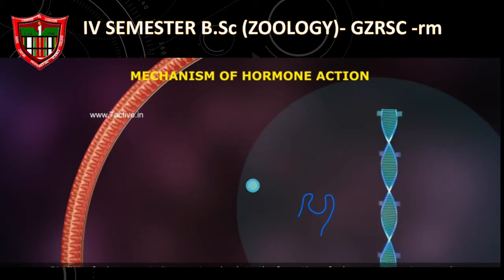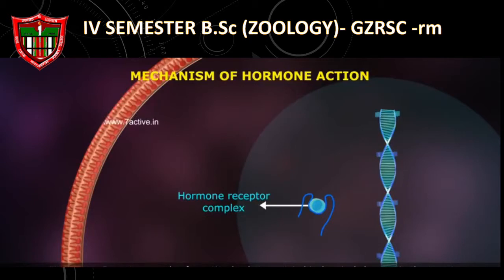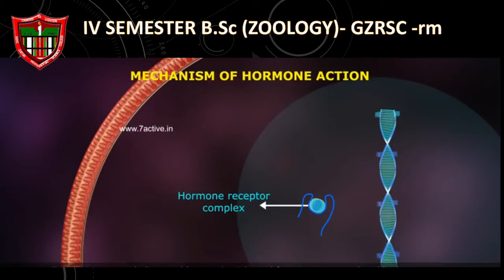Binding of hormones to their receptors leads to the formation of the hormone-receptor complex. Each receptor is specific to one hormone only. Hormone-receptor complex formation leads to certain biochemical changes in the target tissues. The target tissue metabolism and hence physiological functions are regulated by the hormones.